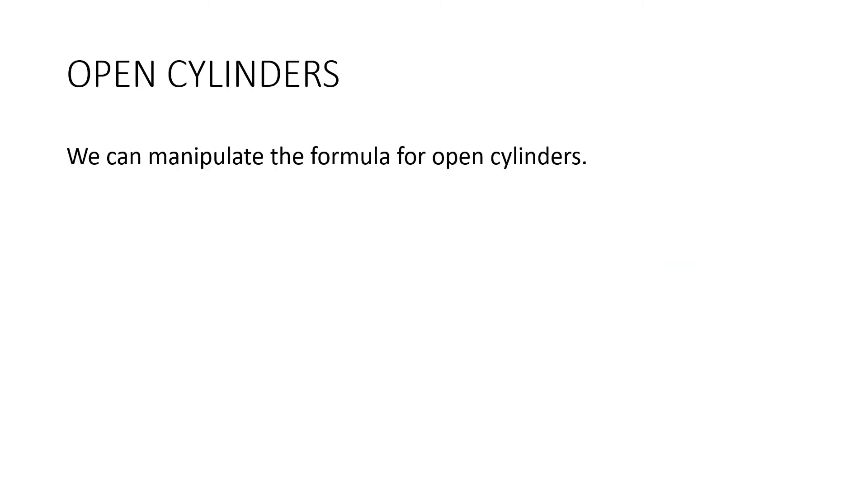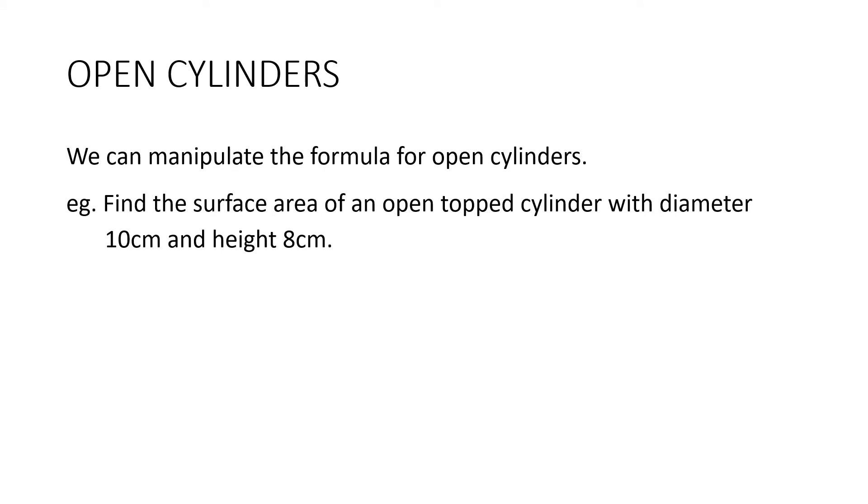Now if we have an open cylinder, then we have to manipulate the formula. The cylinder can be just opened at the top, for instance, or it can be completely opened like a piece of pipe. Have a look at this question. Find the surface area of an open top cylinder with diameter 10cm and height 8cm. If we've got an open top cylinder, we're going to have the curved surface and one circle. So our formula is going to look like this. The only difference is instead of having 2πr², we've just got πr².